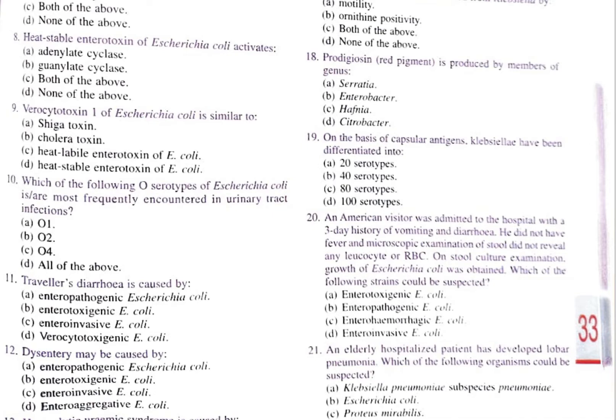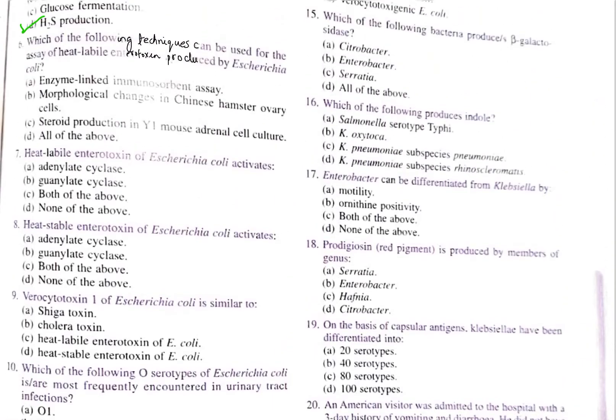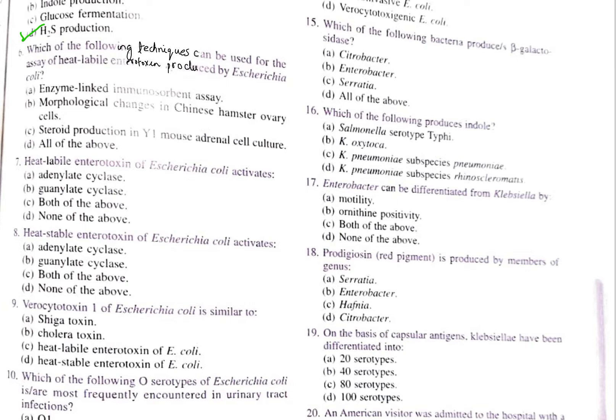Question number 6: which of the following techniques can be used for the assay of heat-labile enterotoxin produced by Escherichia coli? A. Enzyme-linked immunosorbent assay, B. Morphological changes in Chinese hamster ovary cells, C. Steroid production in Y1 mouse adrenal cell culture, D. All of the above. The correct option is D, all of the above. All of these are used for detection of the heat-labile enterotoxin.